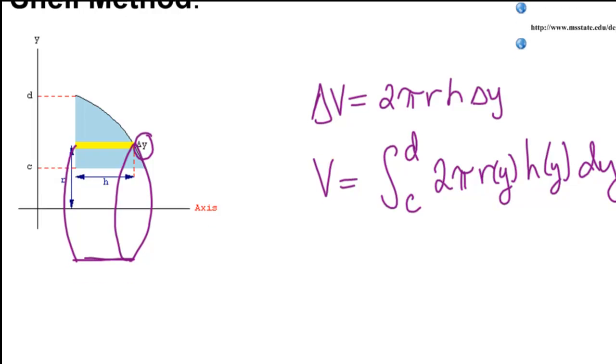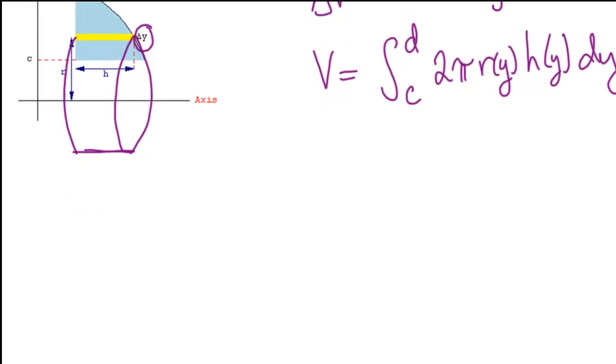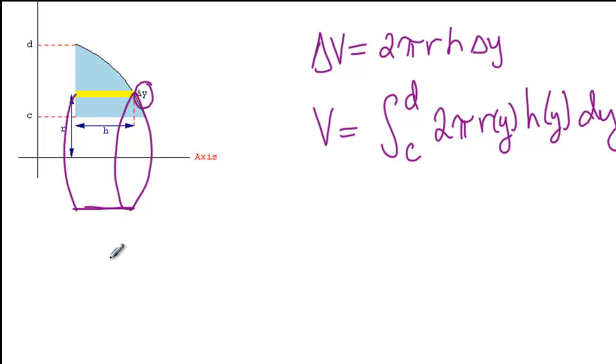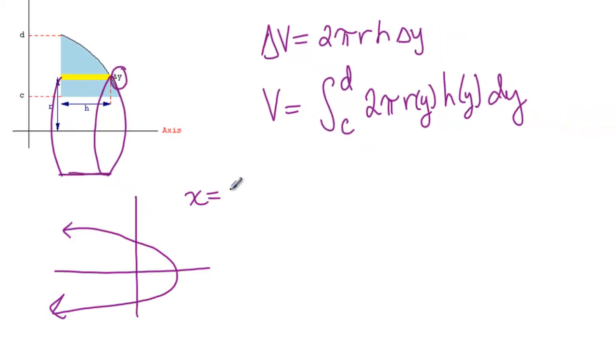So let's look at another example. We have x equals 4 minus y squared from 1 to 4. That's this little region right here. And we revolve that around the x-axis. Then we're going to take a slice parallel to the x-axis and revolve it around.